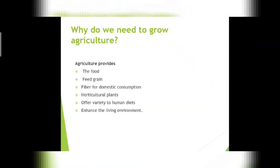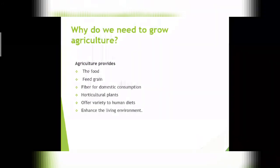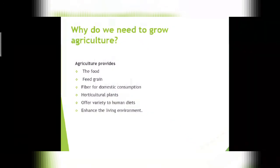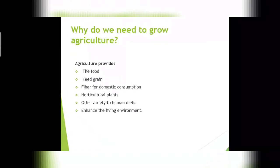Why do we need agriculture? Is it important? Yes, definitely. Pakistan is an agricultural country, meaning it depends on agriculture for its earnings. Agriculture is very important worldwide because from it we can obtain food, feed grains, fiber for domestic consumption, horticultural plants that offer variety in the human diet, and it enhances the living environment.